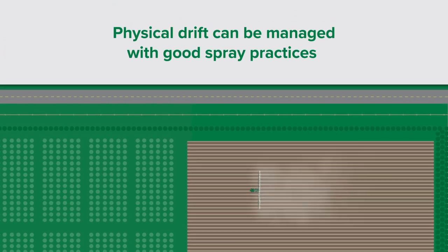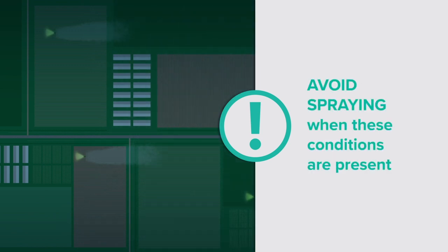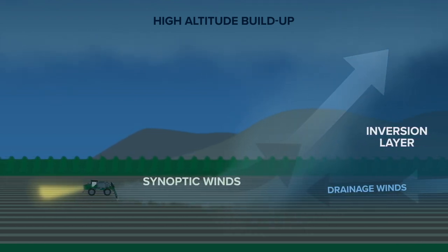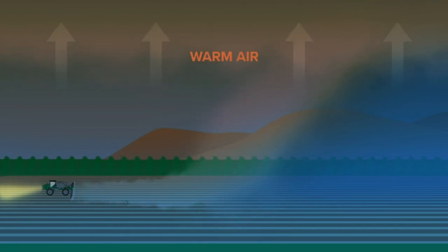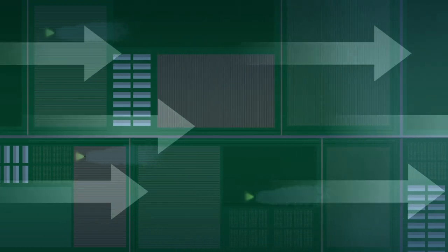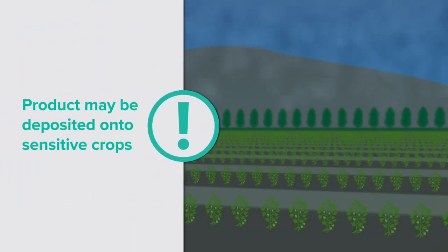While the impact of physical drift can be managed or reduced by implementing good spray practices at a farm level, reducing the impacts of inversion drift is reliant on all growers across an entire region. It's also about being aware of the weather factors that can cause inversions and avoiding spraying when these conditions are present. Inversions occur when the air at ground level becomes cooler than higher air. Unlike warm air that rises, cool air is dense and remains at the surface. Spraying in these conditions traps product in the cool surface air layer where a portion of the sprayed product can remain suspended and be moved off-site in the prevailing air currents, carried long distances until deposited on sensitive crops.